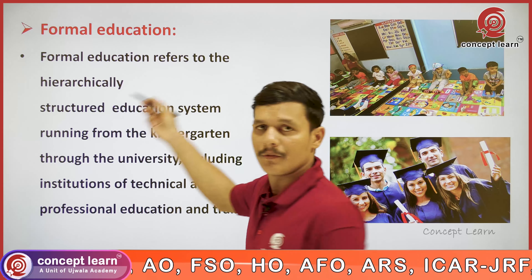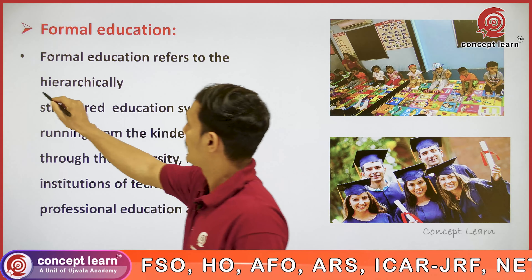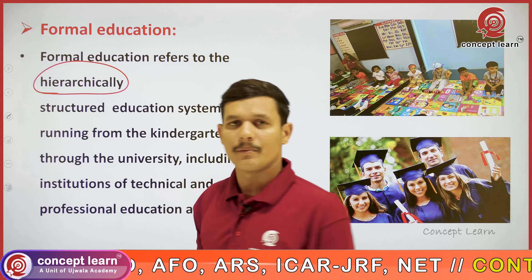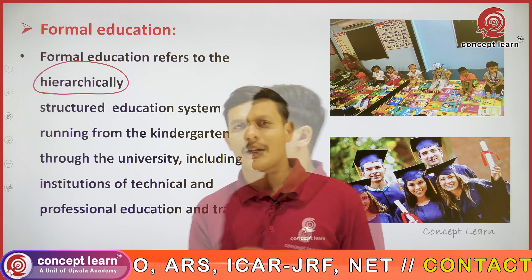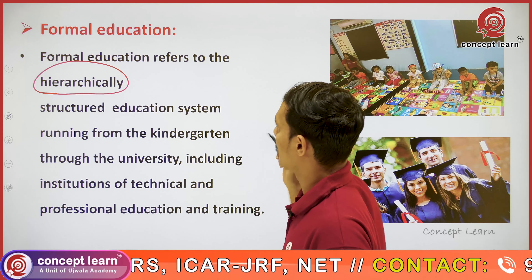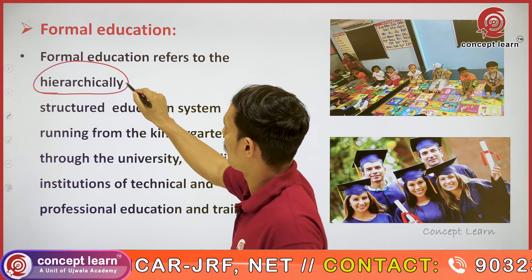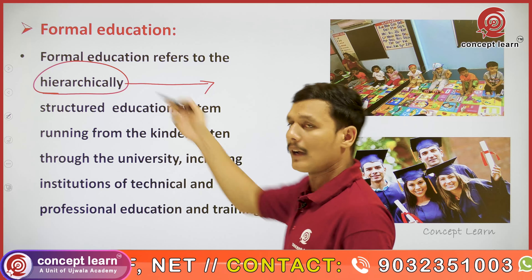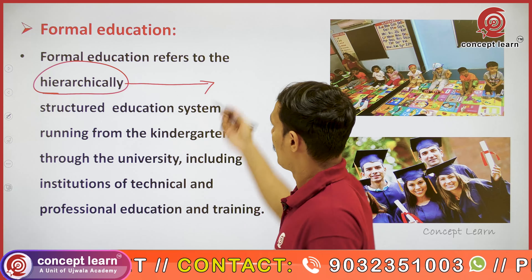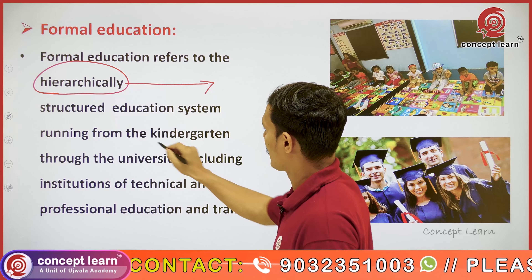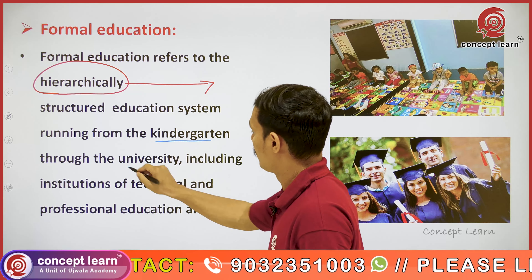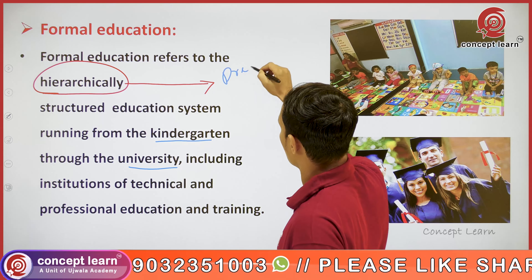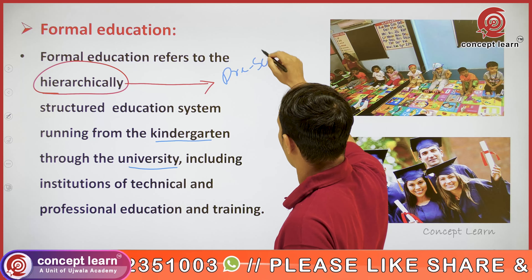Formal education refers to a hierarchically structured education system. Basically, what is meant by hierarchy? Hierarchy means some order in our education system — it ranges from the kindergarten to the university. Kindergarten means preschool or play school.